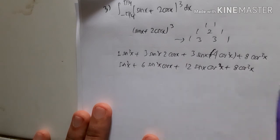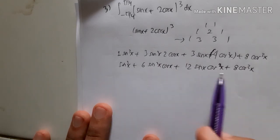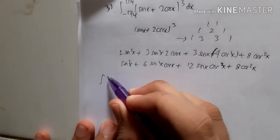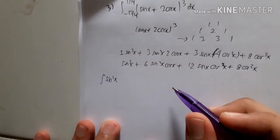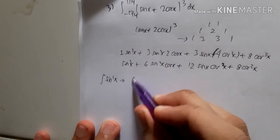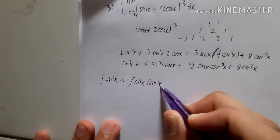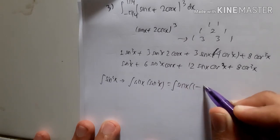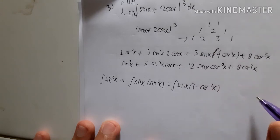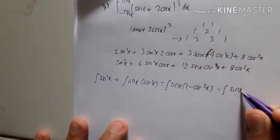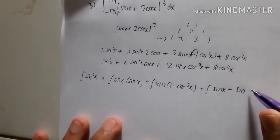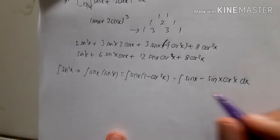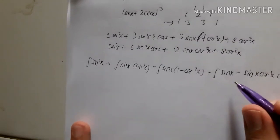Since this is a sum, we can separate and integrate term by term. For the integral of sin³x: we separate it as sin x·sin²x = sin x·(1 − cos²x), expanding to sin x − sin x·cos²x dx.